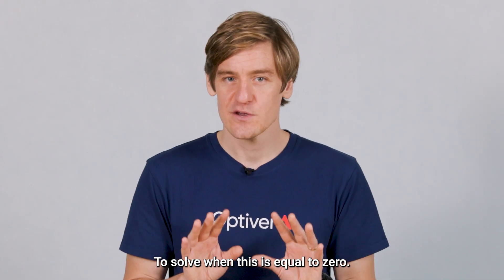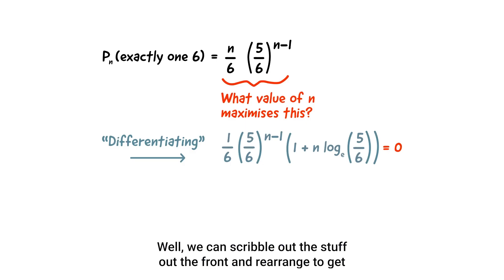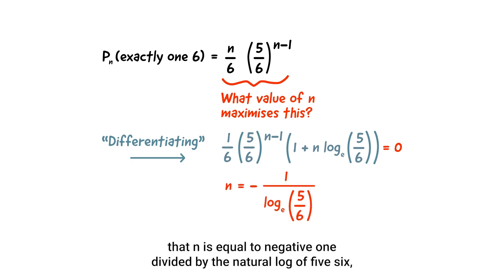To solve when this is equal to zero, well, we can scribble out the stuff out the front, and rearrange to get that n is equal to negative one divided by the natural log of five sixths, which my calculator tells me is pretty close to five and a half.